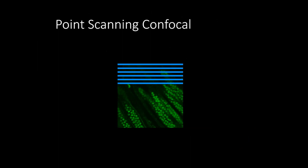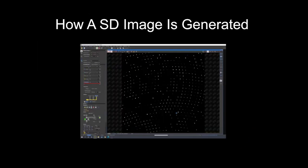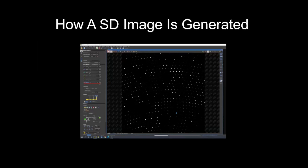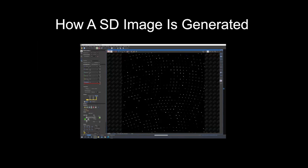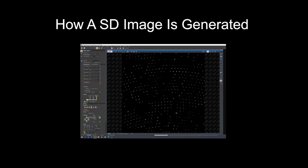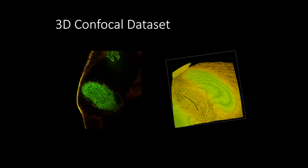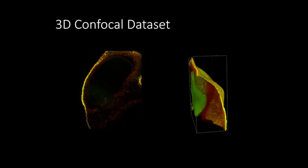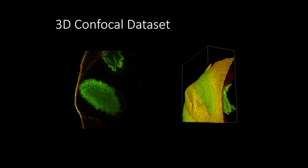Another way to do confocal is spinning disc microscopy, which is faster. A disc with many pinholes spins, scattering light onto your sample and back to the detector, generating images very quickly — though optical sectioning isn't quite as good as point-scanning. You scan through your sample plane by plane, then build those beautiful 3D spinning volume videos seen in presentations.